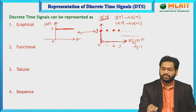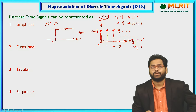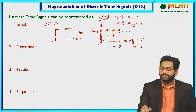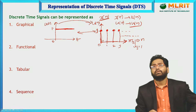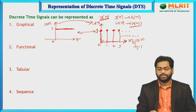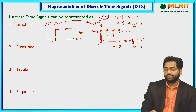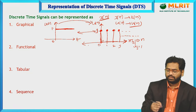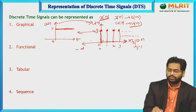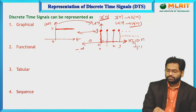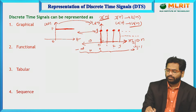This is the graphical representation of u(n). We have come from u(t) to u(n). Now coming to the functional representation — functional representation means it must be in a mathematical domain, as mentioned in the earlier slide.